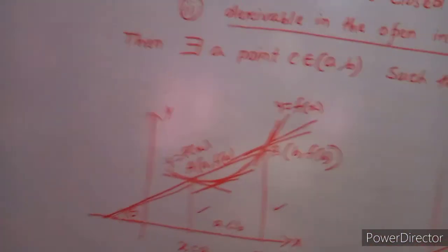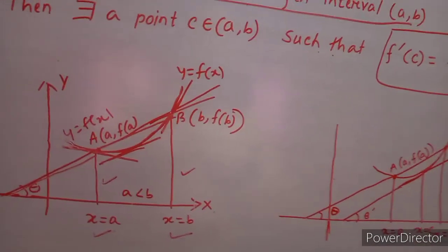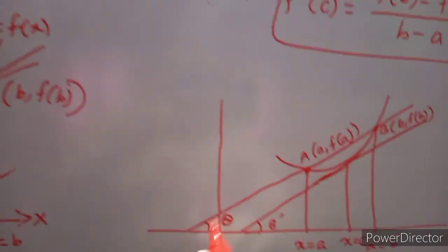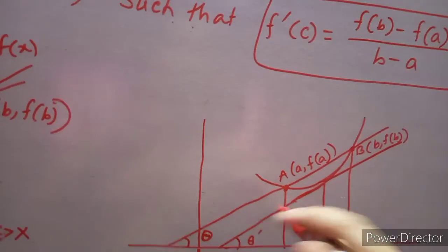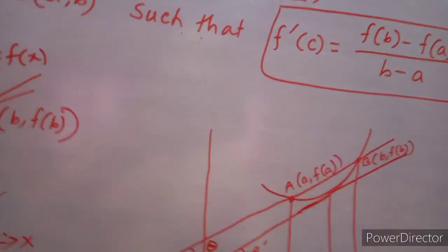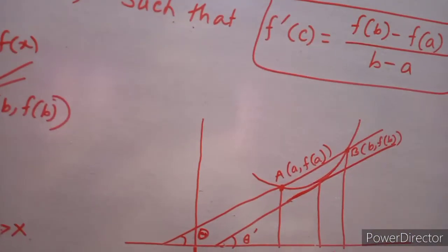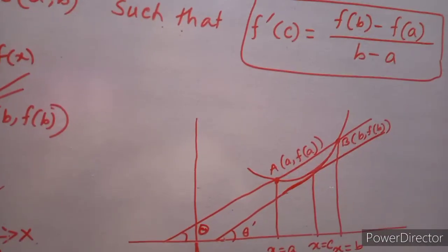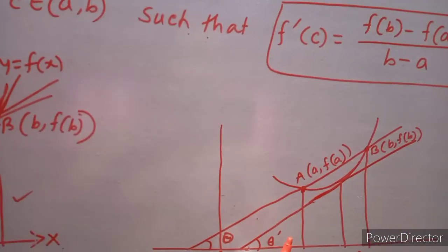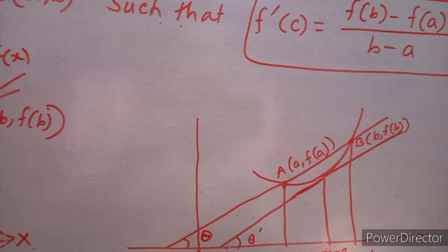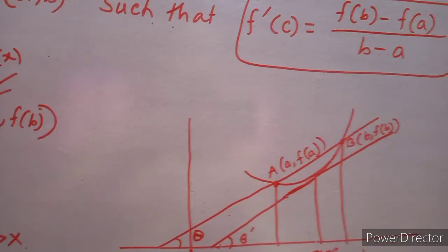We draw another diagram to understand this phenomenon. This line — the tangent — is parallel to the line AB. This tangent touches the curve at the point x equals c, which lies between the points a and b.